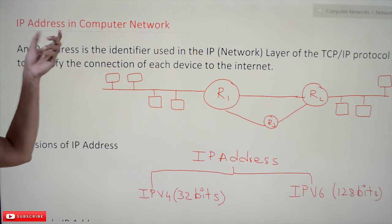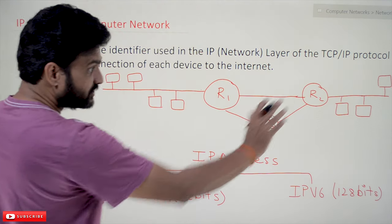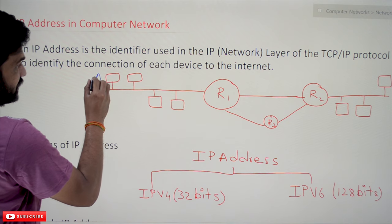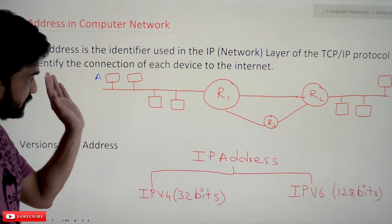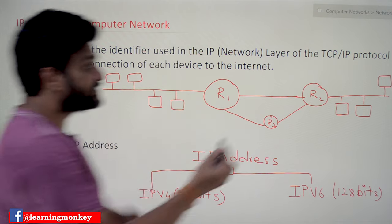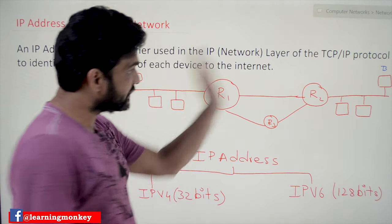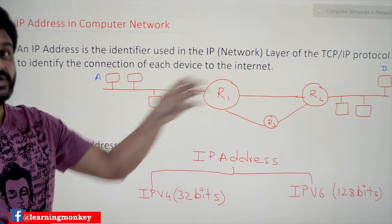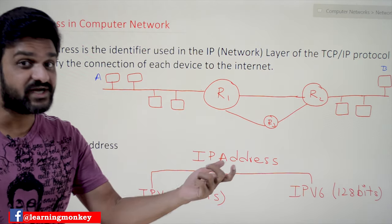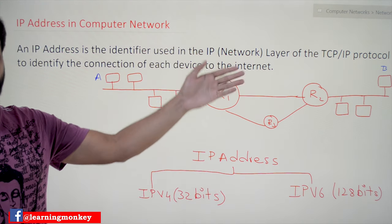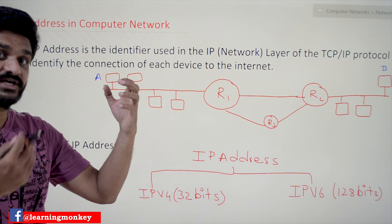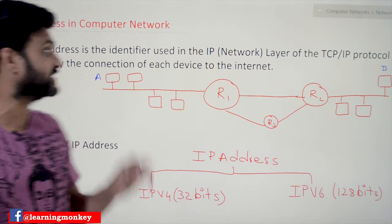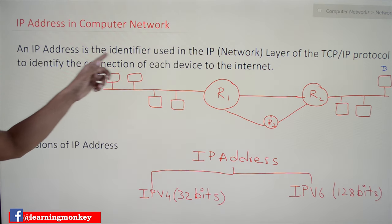Now, what is an IP address in computer networks? In our previous classes we discussed that the source system generating the packets has a source address, and the destination to which packets must reach has a destination address. We took those as A and B for simplicity, but in real time it is not going to be A and B. That unique representation of each and every system is the addressing scheme we call an IP address.